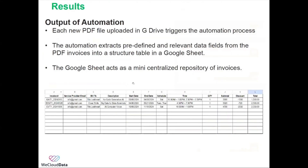This is the output of the automation result. Each new PDF file uploaded in Google Drive triggers the automation process. The automation extracts predefined and relevant data fields from the PDF invoices into a structured table in a Google Sheet. The Google Sheet acts as a mini centralized repository of invoices, as you can see in this sample screenshot showing how records get processed and collected in the predefined columns.